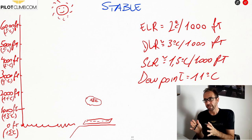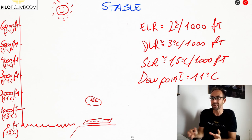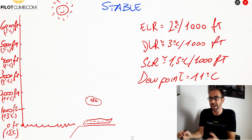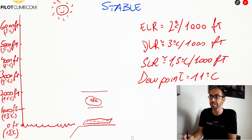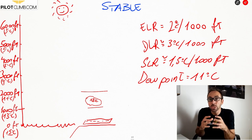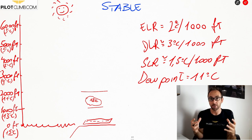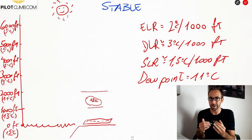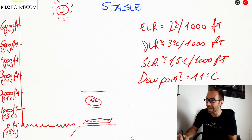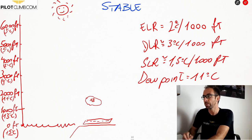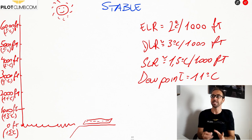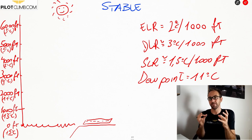Since that mass of air is warmer compared to the surrounding air at 1,000 feet — which is at 13°C — the mass of air is warmer than the air around it. And since it's warmer, it's lighter, so it will climb because it's less dense than the surrounding air. So now let's see what happens in a stable environment.